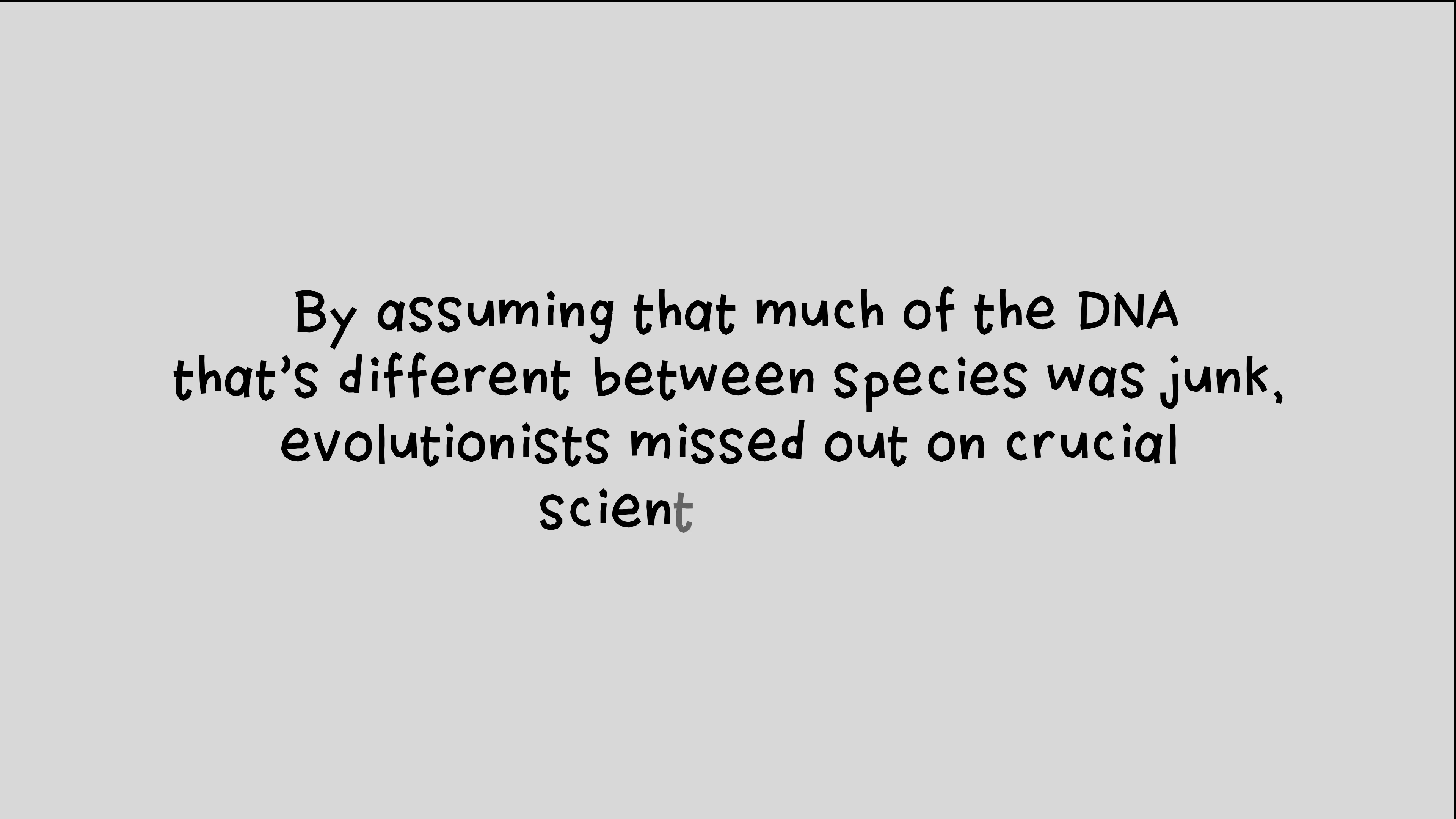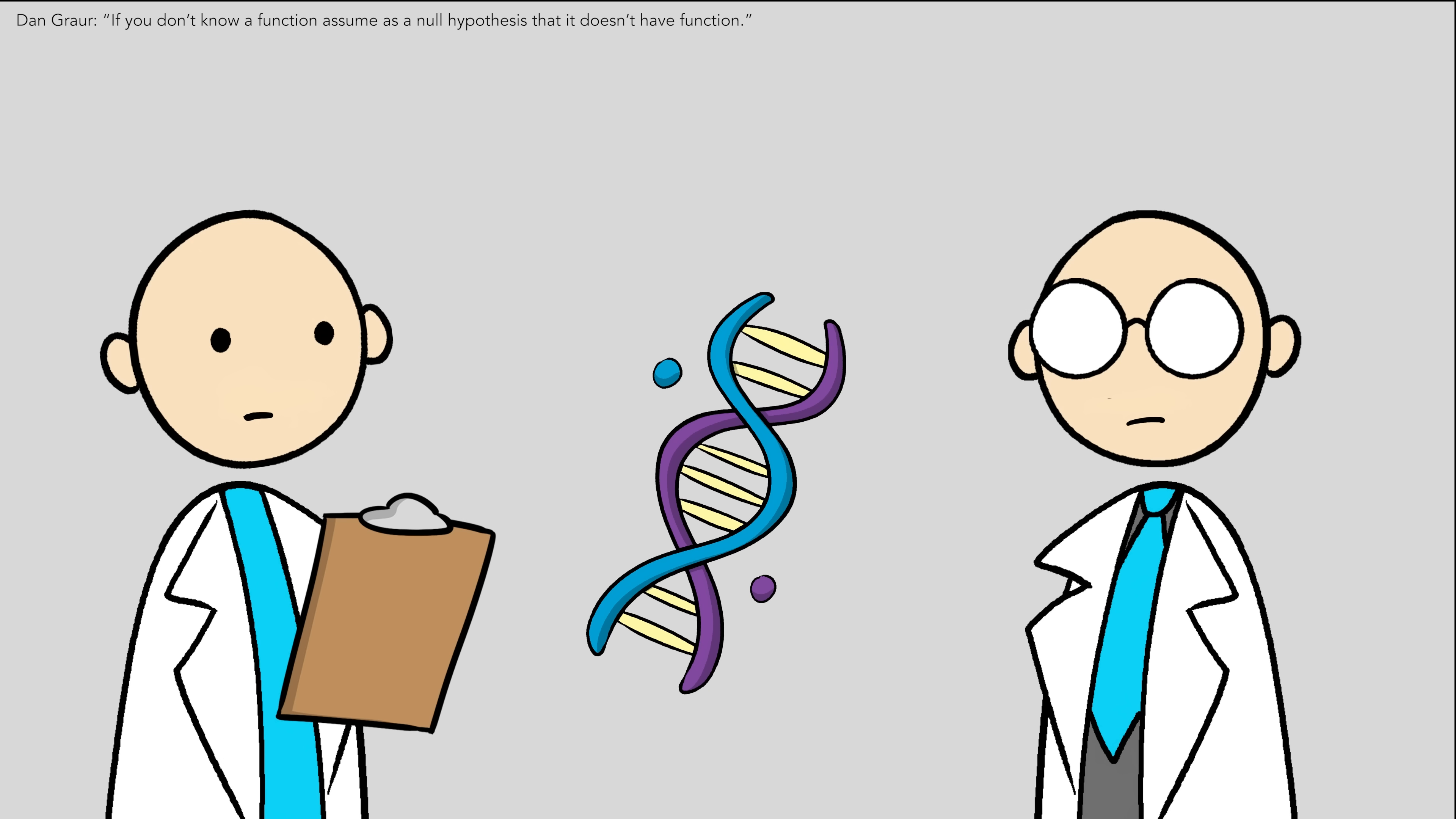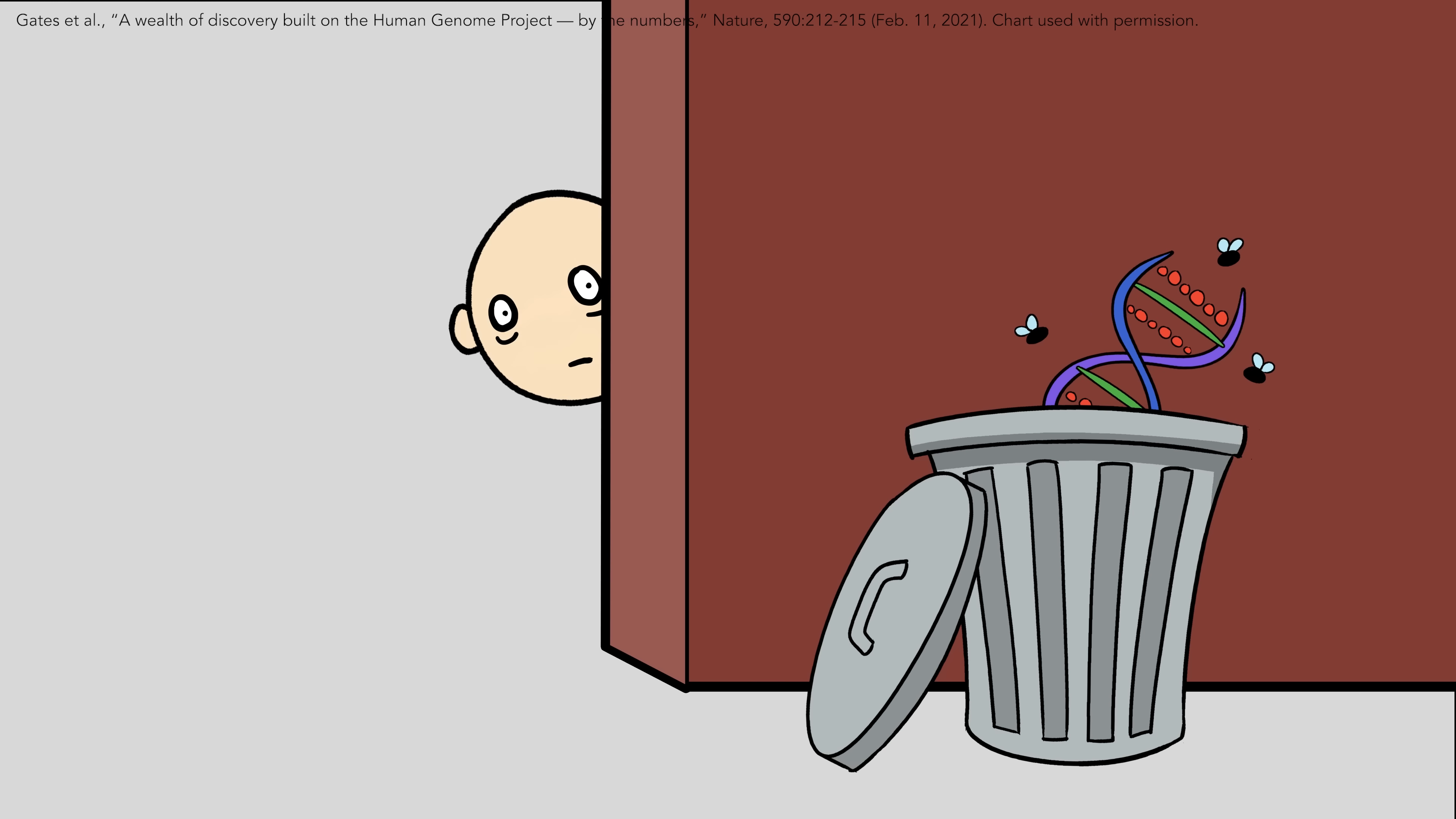Others rely on a junk-of-the-gaps argument, claiming that until we find function in a gene, we should assume it's junk. But this argument is defeated by the trendline of the data. We're finding function practically everywhere we look. Regardless, they have faith that maybe the next gene right around the corner will be junk this time.